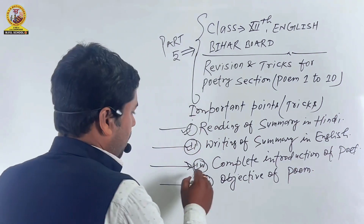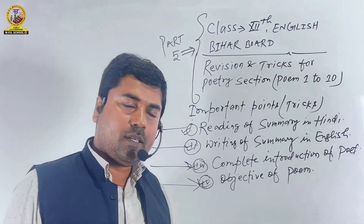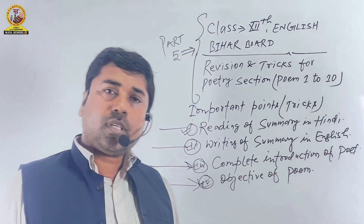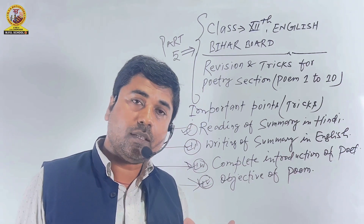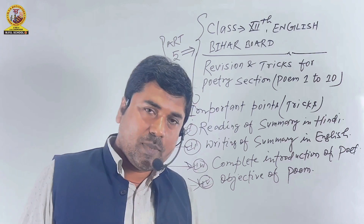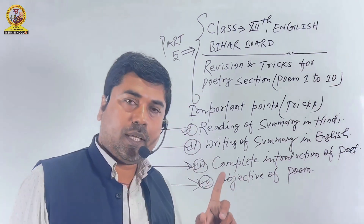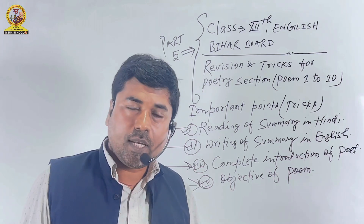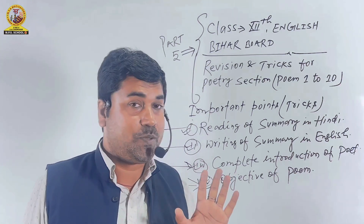Objective of poem — this is point number 4. Friends, kavi ne jo kavita likhi hai, uske likhne ka peeche kya maksad tha, kya uddeshya tha — usko jaanna zaroori hai, usko samajhna zaroori hai, jo point number 4 mein aapko pata hai. Jab tak kavita ka uddeshya nahin samjhenge, kavita ka summary aap theek se nahin samajh paayenge.